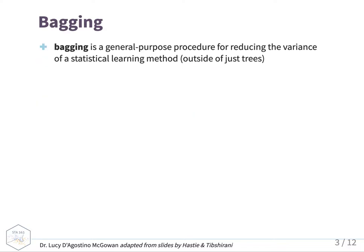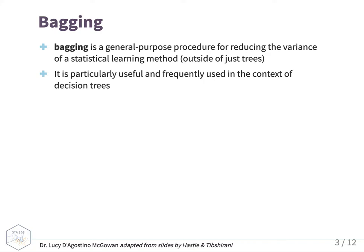Bagging is basically a general purpose procedure for reducing the variance of a statistical learning method. It works outside of just trees, but for this lecture we're going to be talking about it specifically in the context of decision trees, where it's particularly useful and frequently used. Some people call this bootstrap aggregation as well, so you might see it called that elsewhere.